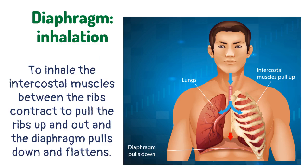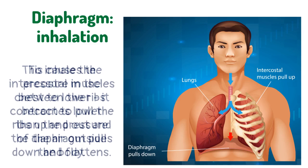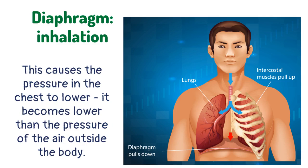To inhale, the intercostal muscles between the ribs contract to pull the ribs up and out, and the diaphragm pulls down and flattens. This causes the pressure in the chest to lower — it becomes lower than the pressure of the air outside the body.